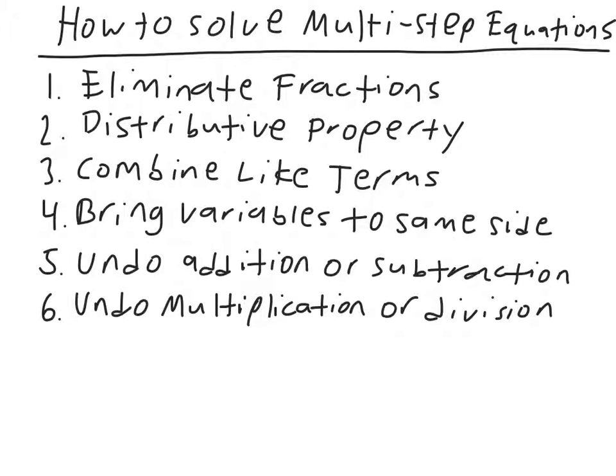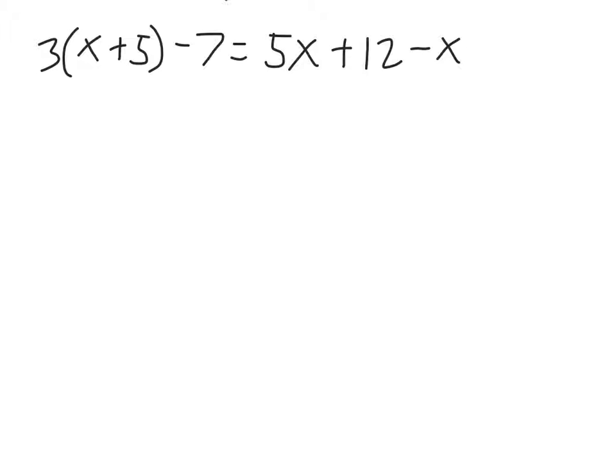We're going to start examples now, so make sure you have these steps written down and I'm going to refer to them. Here's our first problem. Following the steps, the first step was to eliminate the fractions — there aren't any fractions, so skip that step. The second step is the distributive property, and there are parentheses here, so we need to use it. It's going to be 3 times x, which is 3x, and 3 times 5, which is plus 15. We did the distributive property there, then drop everything else down.